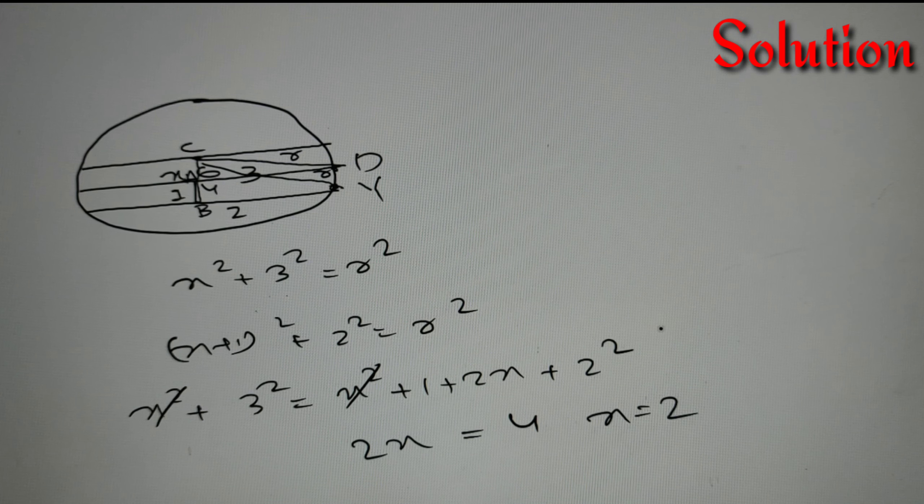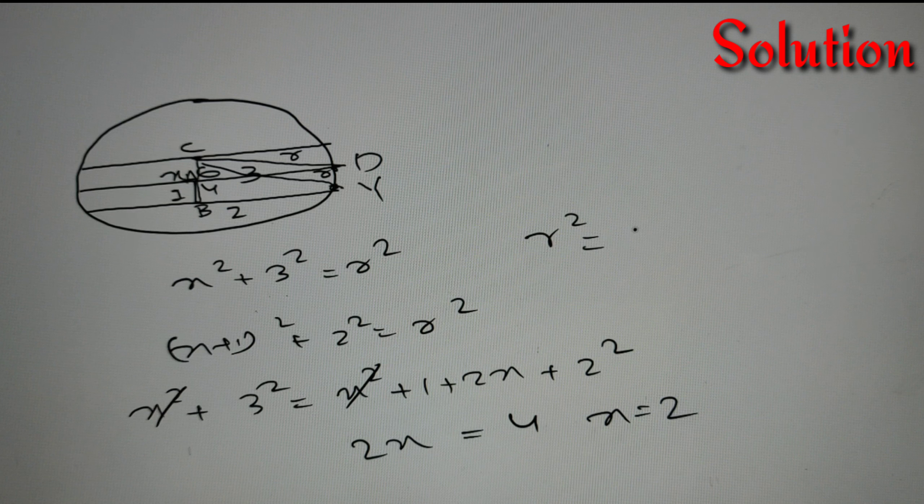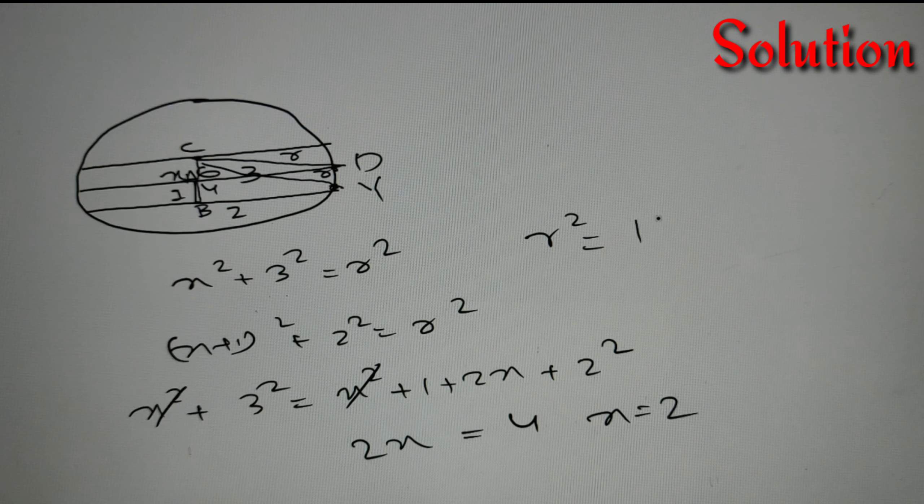But according to our given question, we had to find the value of R. So R² = X² + 3². So R² = 2² + 3² that is equal to 13 or the value of radius of the circle is equal to √13.